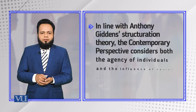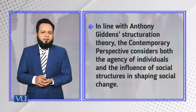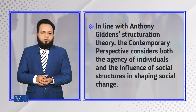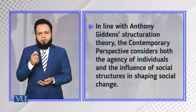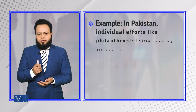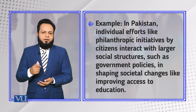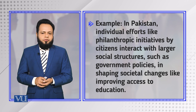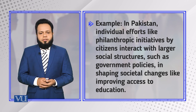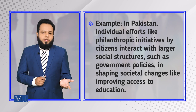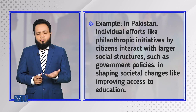In line with Anthony Giddens' Structuration Theory, the contemporary perspective considers both the agency of individuals and the influence of social structures in shaping social change. For example, in Pakistan, individual efforts like philanthropic initiatives by citizens interact with larger social structures such as government policies in shaping societal changes like improving social access to education.